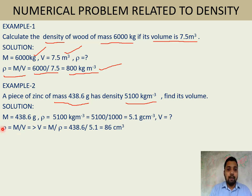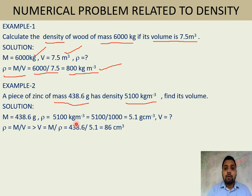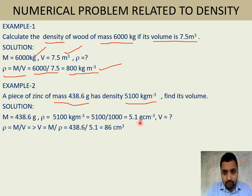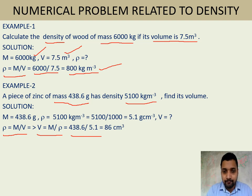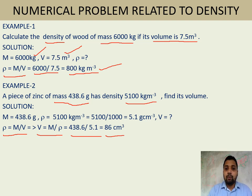In the solution: m = 438.6 g, ρ = 5100 kg/m³. Since 1000 kg/m³ = 1 g/cm³, we convert: 5100 kg/m³ = 5100 / 1000 = 5.1 g/cm³. We need to find volume V. From the formula ρ = m / V, we get V = m / ρ = 438.6 / 5.1. This gives the volume in cm³.